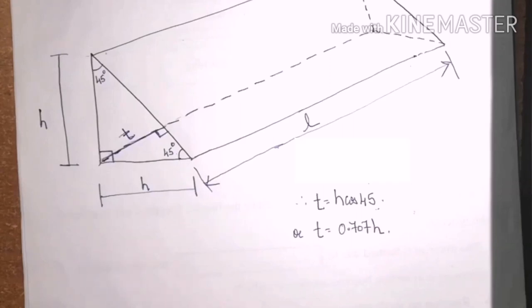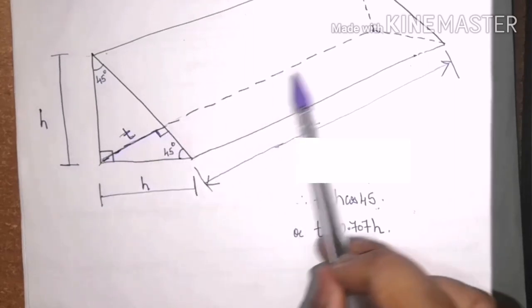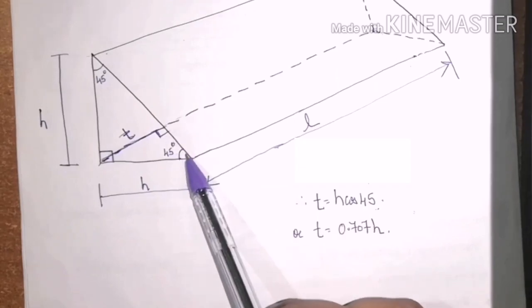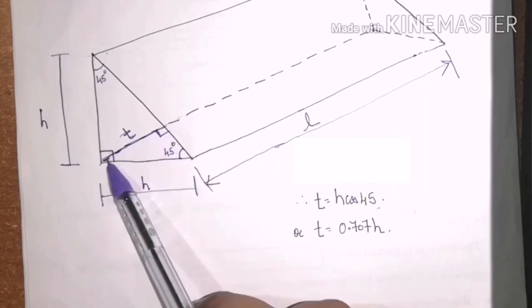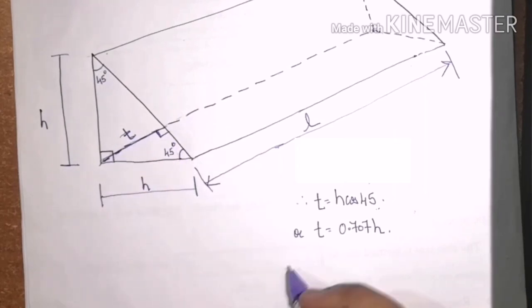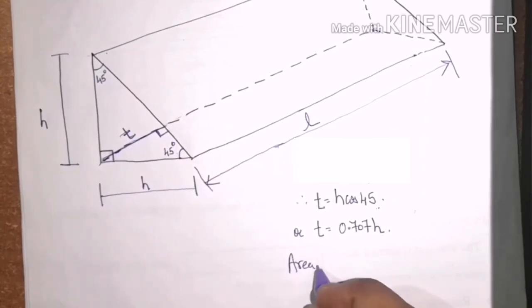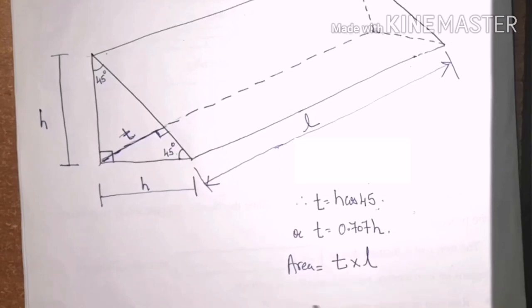Now, when we consider the area of failure, we consider the minimum cross section area. Now, when this joint will fail, the area will be L multiplied by T because T is my minimum dimension. So, for area, I will write area is equal to T multiplied by L, which is the minimum cross section area.